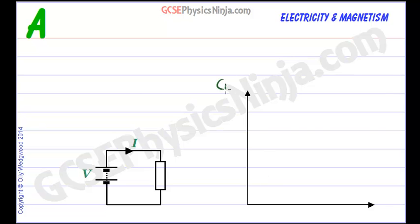We're going to have current on this axis. We're going to have potential difference voltage on this axis. Potential difference will be measured in volts, current will be measured in amps.